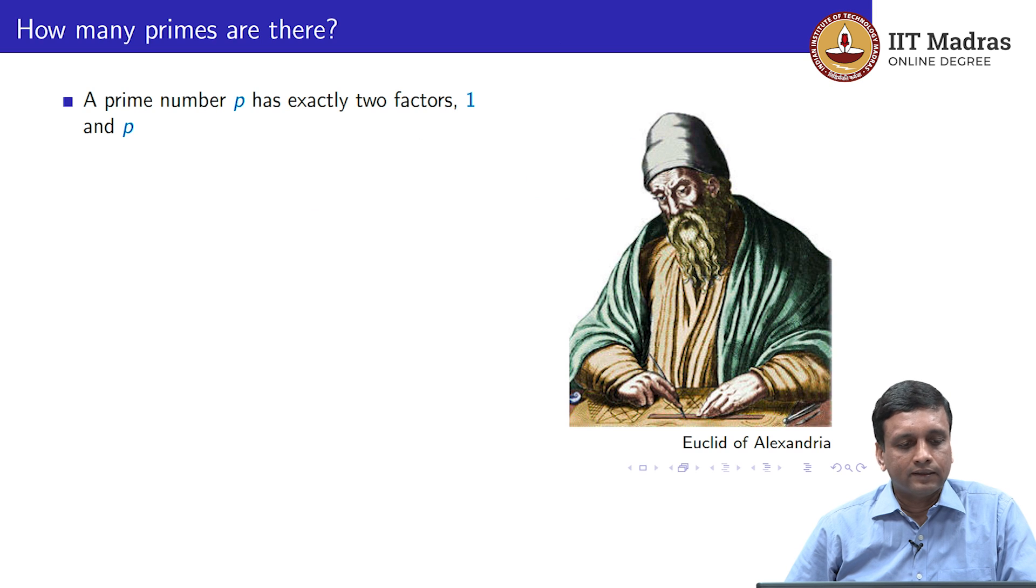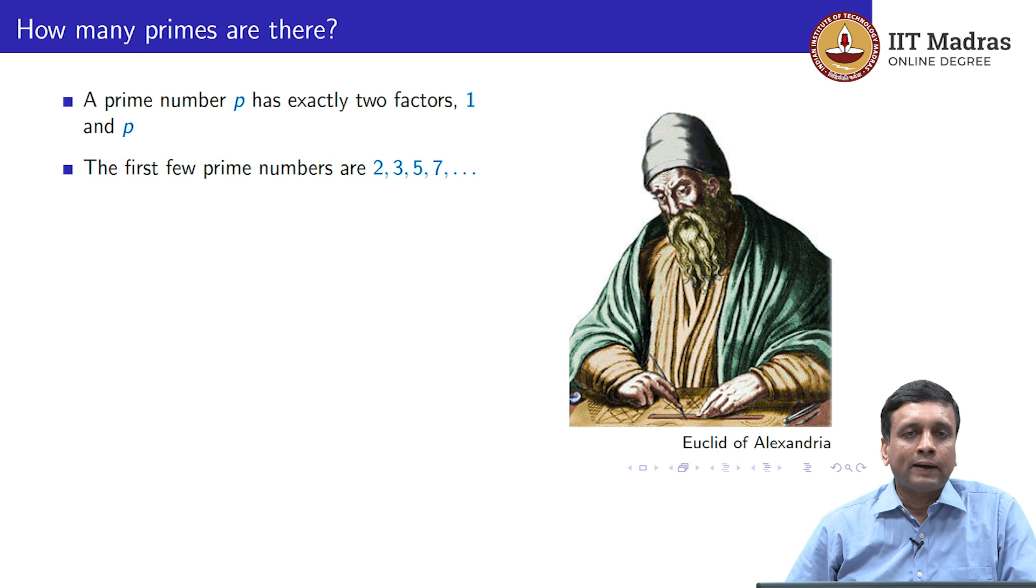So, how many prime numbers are there? Remember that a prime number has only two factors, 1 and itself. It must have exactly two factors, so 1 is not a prime. The first few prime numbers are 2, 3, then 4 is not a prime because 4 is divisible by 2, then 5, again 6 is not a prime and so on.